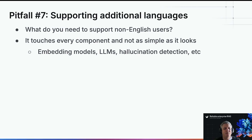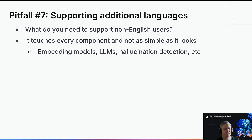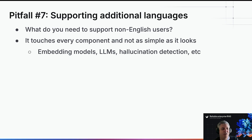The last pitfall is multilingual support. A lot of people start with English — it's the easiest, everything supports it, and you get a POC up and running. But when you need to support non-English users, which may be a requirement for your organization, it turns out it's not as easy. You have to make sure each component supports the language you need, and sometimes they don't. You have to change things and your quality suffers. So you need to think about this up front if you want to reach production scale.